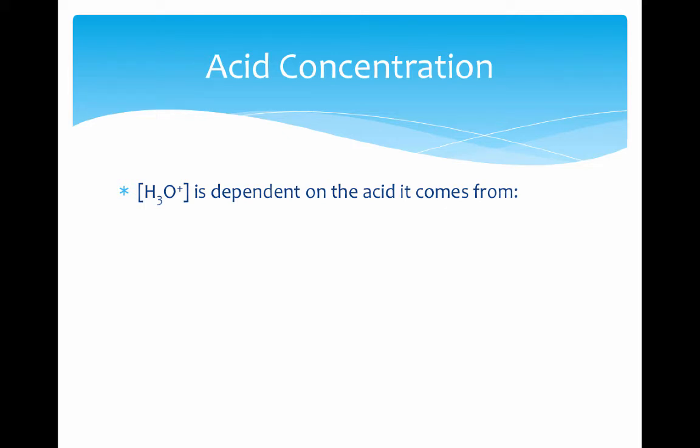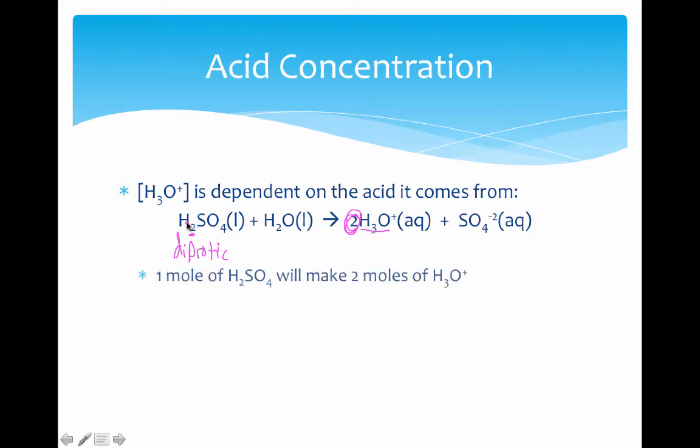Continuing this idea, notice that H2SO4 has two H+ per molecule. When we write the reaction out, we get two H3O ions. This is a diprotic acid because it produces two H3O ions per one mole. One mole of sulfuric acid makes two moles of H3O+ ions. Therefore, a one mole solution dissolved in one liter of water creates a two molar concentration, because we get twice the H3O+ per mole of acid dissolved.